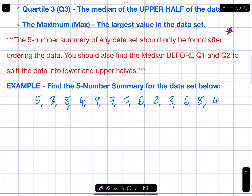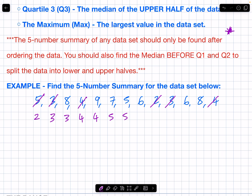Find the five number summary for the data set below. Firstly, we need to order the data: 2, 3, 3, 4, 4, 5, 5, 6, 6, 7, 8, 8, 9. Data has been ordered.